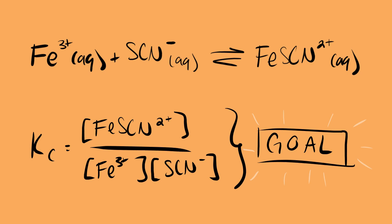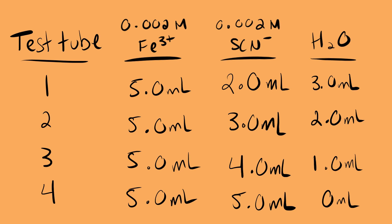The way that we are going to be doing this is by setting up not just one test tube, but four different test tubes with varying concentrations of the iron and the thiocyanate. When the reactants reach equilibrium with the product, that iron thiocyanate with a 2+ charge, the concentration of our iron thiocyanate in each of these test tubes is going to be different since we're adding a different amount of reactant to each test tube.